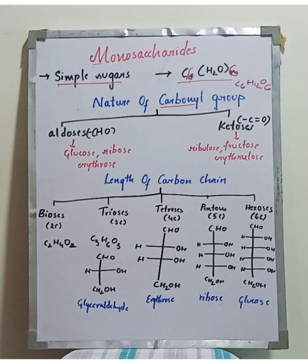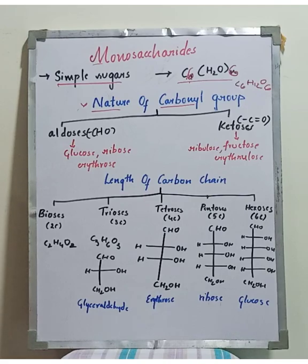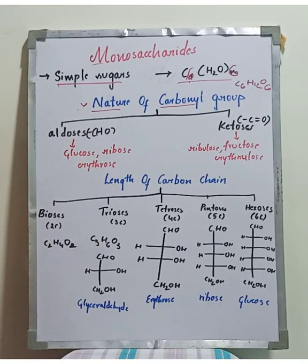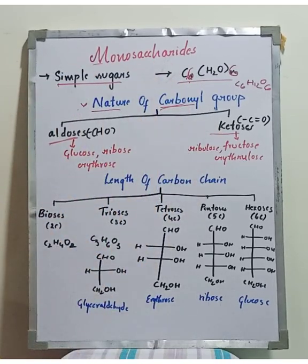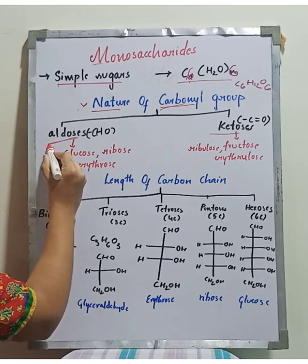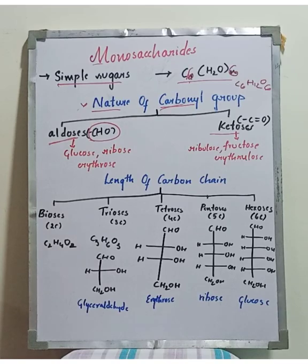Monosaccharides can be further classified based on different characteristics. First, based on the nature of the carbonyl group: monosaccharides that contain an aldehyde (CHO) group are called aldoses, and those containing a ketone (C=O) group are called ketoses.